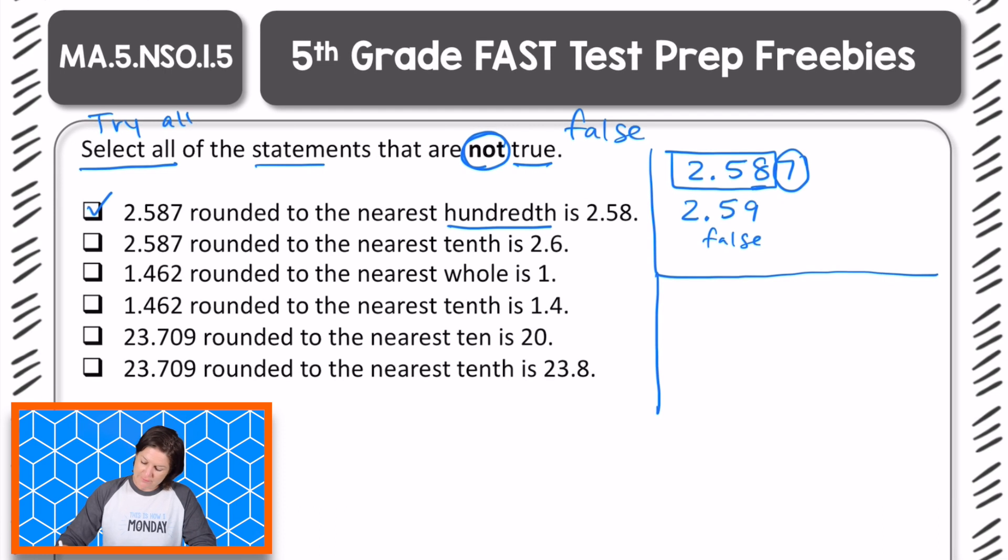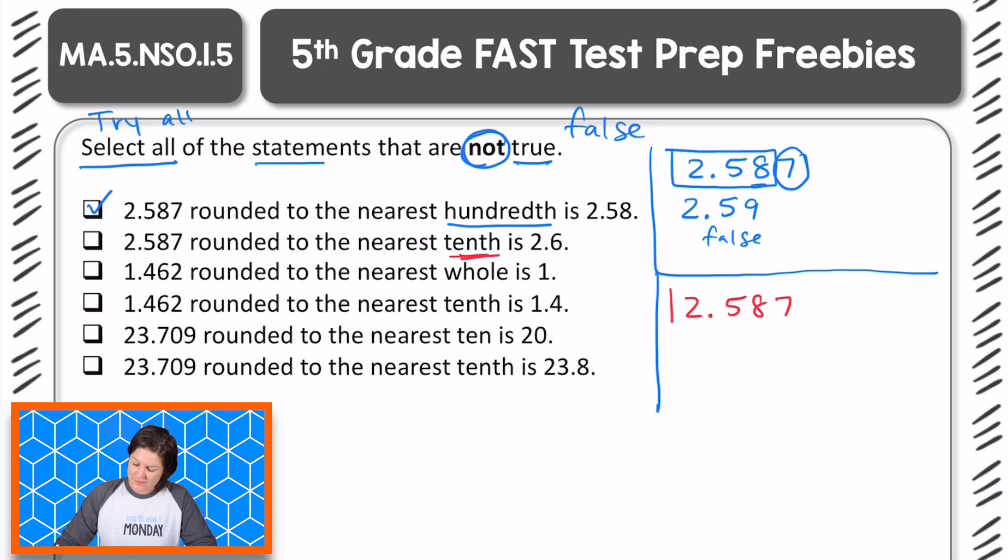Let's take a look at the next one. We have 2.587 thousandths to be correct, rounded to the nearest tenth is 2.6. So what digit is in the tenths place right now? We've got a five, which means that we have 2.5 tenths and 87 thousandths behind it. Because we have 87 thousandths that is past the halfway mark between each tenth, making it so it would round up to 2.6 tenths. This is true, but we are looking for the answers that are not true. So what can we do with this answer choice? Eliminate it, right?